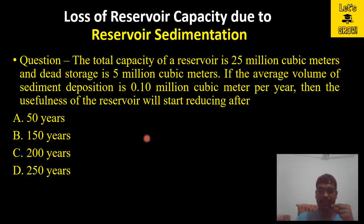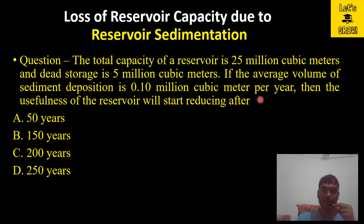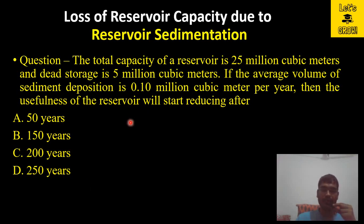The question says: the total capacity of a reservoir is 25 million cubic meters and dead storage is 5 million cubic meters. If the average volume of sediment deposition is 0.10 million cubic meters per year, the usefulness of the reservoir will start reducing after — (a) 50 years, (b) 150 years, (c) 200 years, or (d) 250 years. We have to calculate after how many years the reservoir capacity is going to reduce.